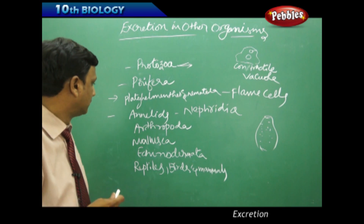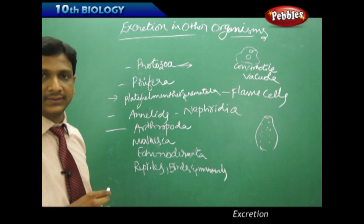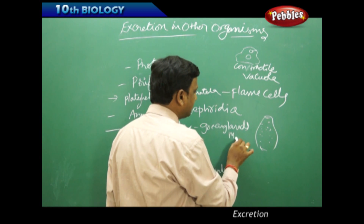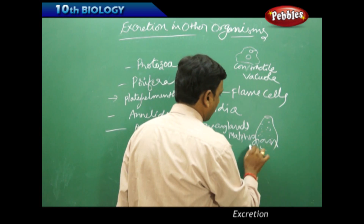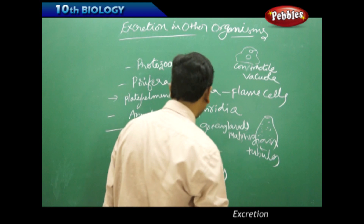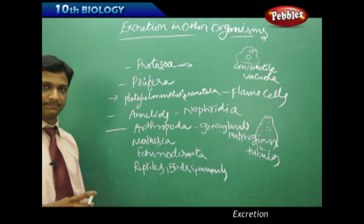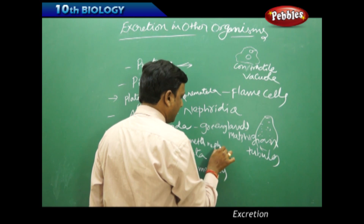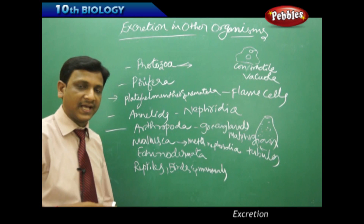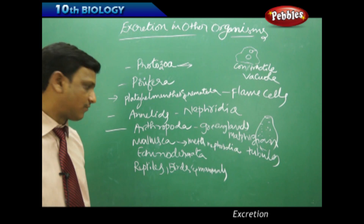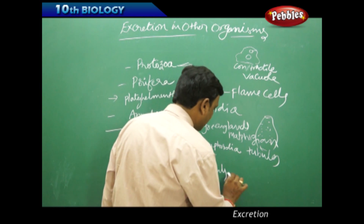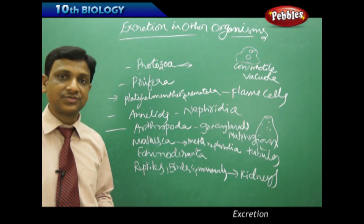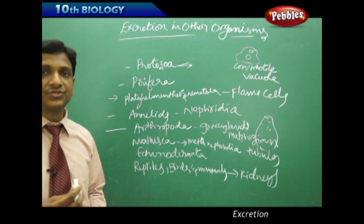In Arthropoda, excretory organs include green glands and Malpighian tubules. In Mollusca, the excretory organs are called metanephridia. In Echinodermata, water channels allow water flow and excretion takes place through them. In reptiles, birds, and mammals, kidneys are the excretory organs. These are the various excretory organs that help different organisms excrete nitrogenous waste produced in their bodies.